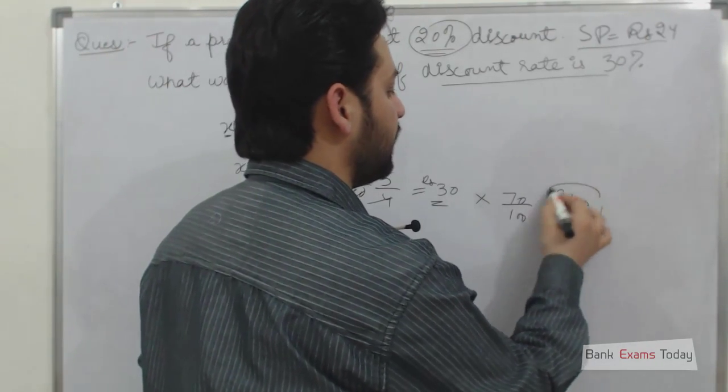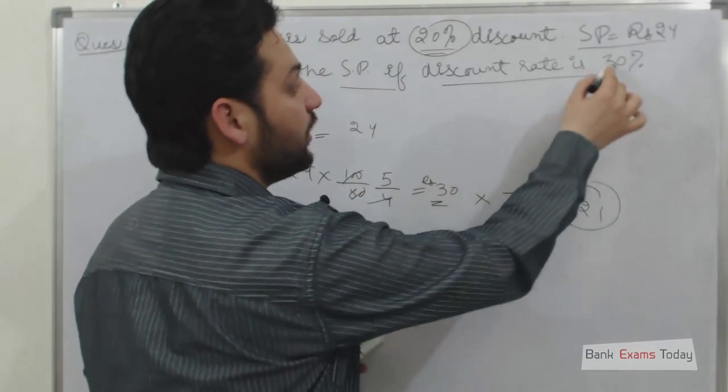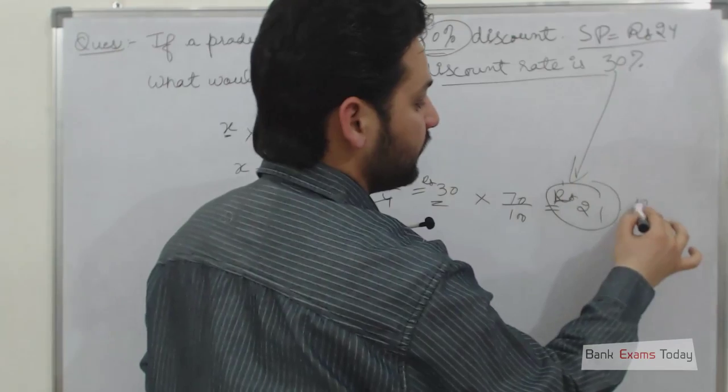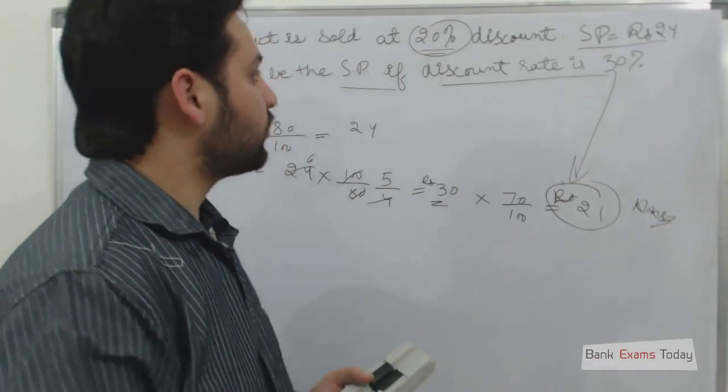So Rs. 21 will be the selling price if the discount rate is 30%. This will be our answer. It was a very simple question.